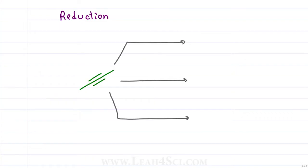When it comes to alkyne reduction, we have three reactions. The first is similar to alkenes, where we react H2 with a metal catalyst for a full reduction — meaning we break all the pi bonds to give us an alkane.